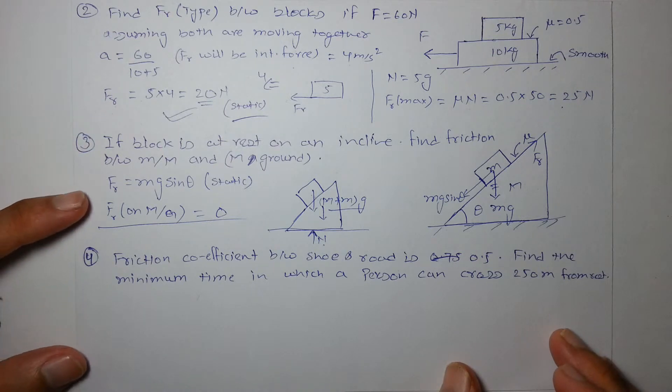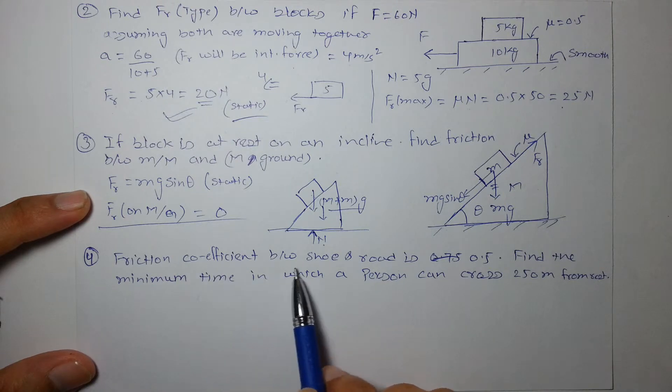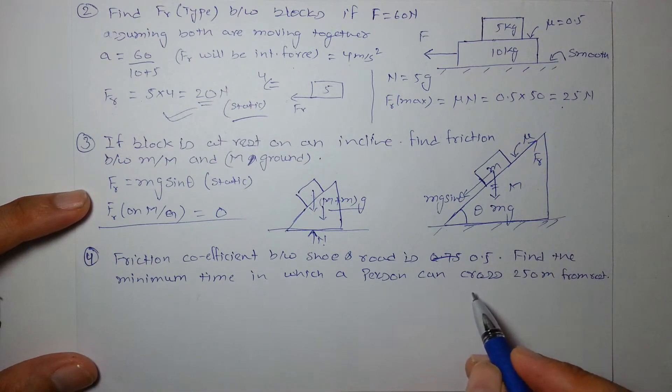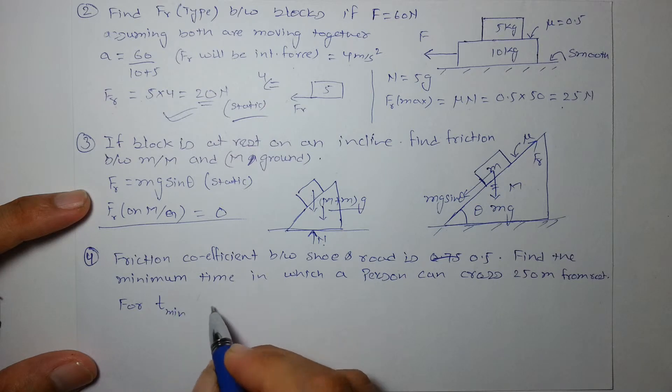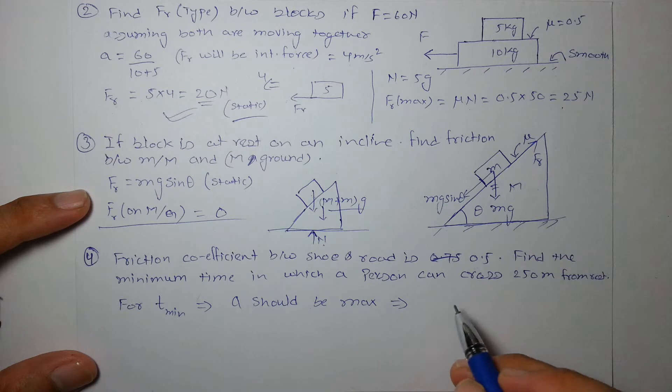The next example is also a very famous and a good one. The coefficient of friction between the shoe and road is 0.5. We have to find the minimum time in which a person can cross 250 meters from rest. For T min, acceleration should be maximum, and the maximum acceleration a person can get with the help of friction on a horizontal road will be mu g.